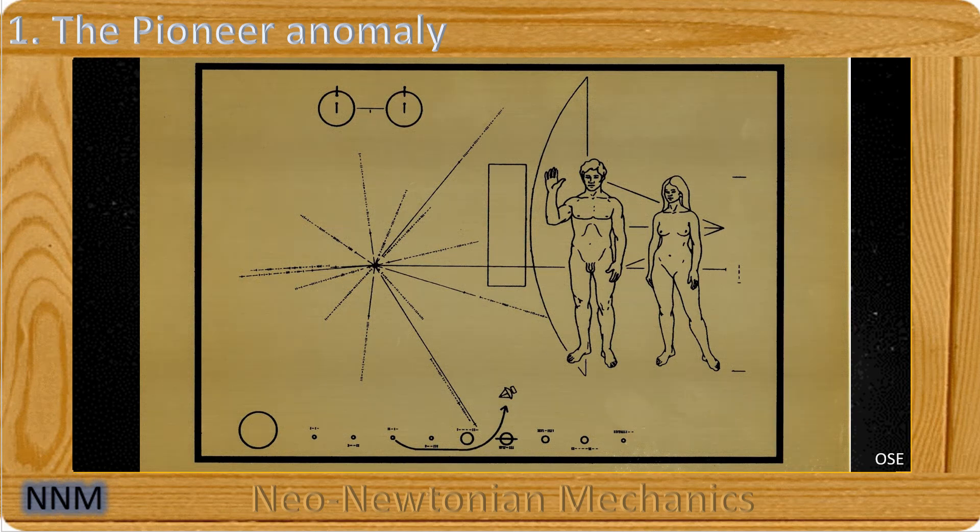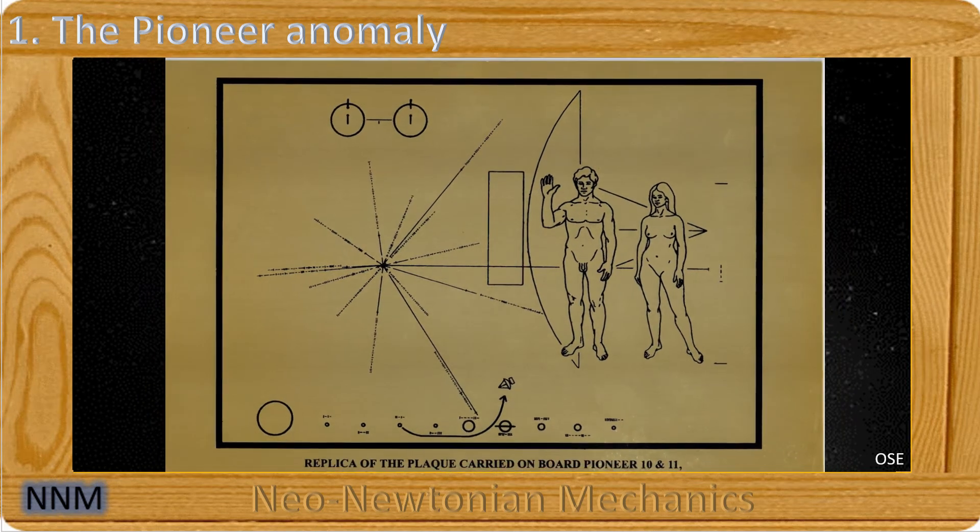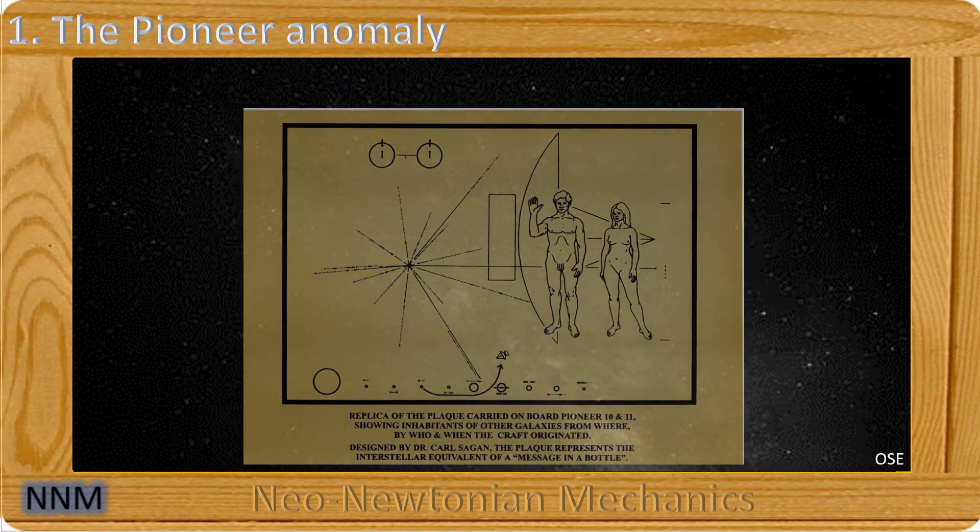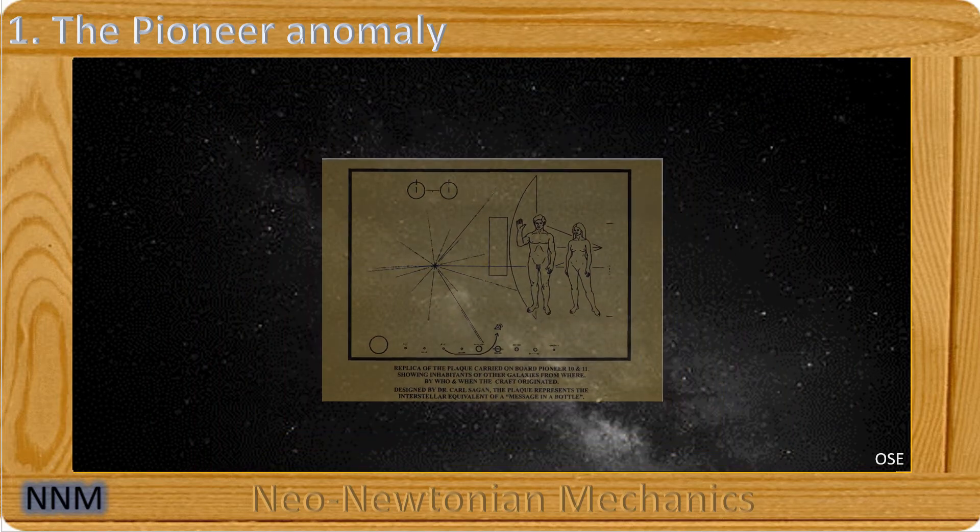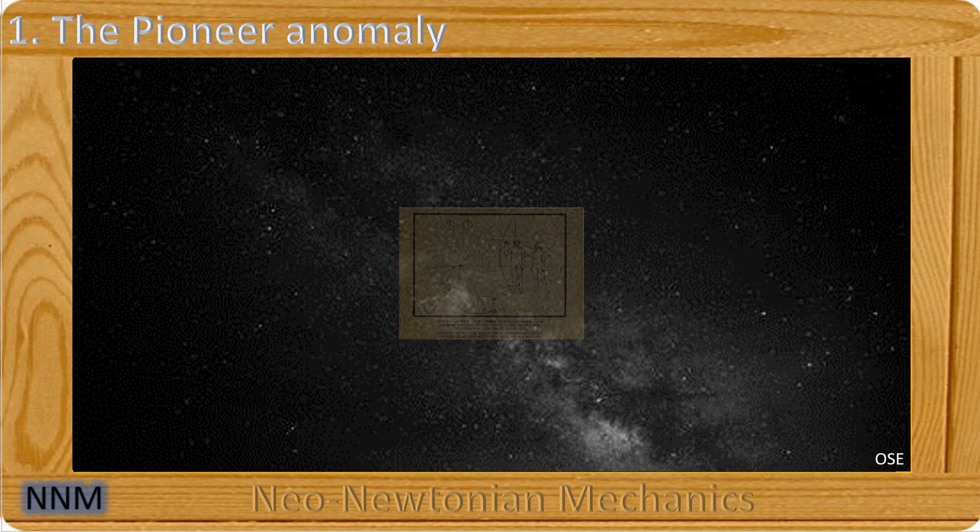Pioneer probes, you probably know, they are the ones who have taken on board engraved gold plates intended for possible extraterrestrials, like bottles thrown into the sea. But what is the anomaly of the Pioneer probes, and how to explain it?